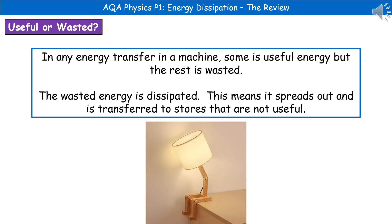If we consider the example of the lamp at the bottom there, the useful energy is that which is going into generating the light. What you've probably noticed is that if you've got a lamp on and put your hand close to it, it's actually quite warm. So part of the wasted energy is that thermal energy. Some of the energy is useful, but some is wasted.